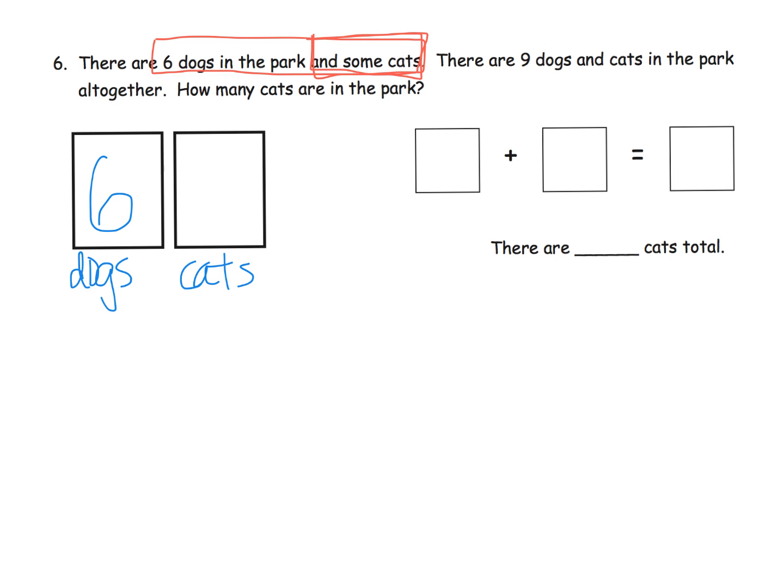Now, if I want to, I could go over to this number sentence, and I know that I can kind of put in the six right here, and by reading the rest of the sentence, it says there are nine dogs and cats in the park all together. So, our total, our whole number, is nine. So, if we were to think of this as a number bond, it would look like the nine would be our total right here, and then our one part would be a six, and then this guy would be our unknown, our change is unknown.